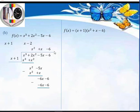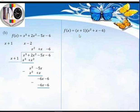So f(x) = (x + 1)(x² + x − 6). To factorize x² + x − 6 completely, we need two more factors. Since the highest power of x in f(x) is 3, we must have three factors in total. The quadratic will give us two more factors.